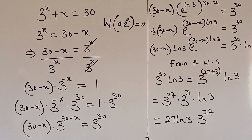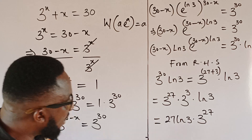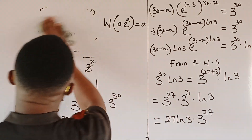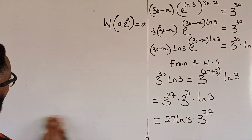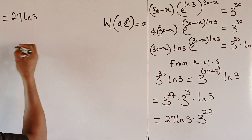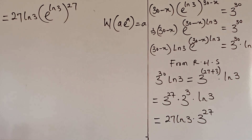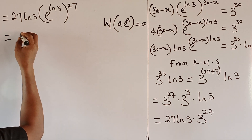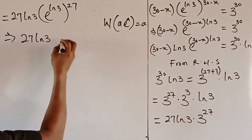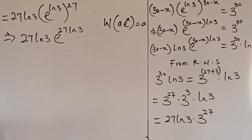The next thing is to take e to the ln of 3 so that the exponent can match the coefficient. I can write the right-hand side as 27 ln of 3 times e to the ln of 3, all raised to the power of 27, which simplifies to 27 ln of 3 times e to the power of 27 ln of 3. We have achieved the desired symmetricity and parity on the right-hand side.